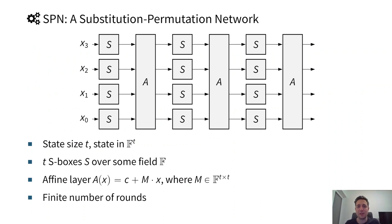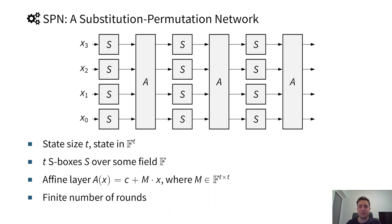What is a partial SPN scheme? Let me first start with an SPN scheme, a substitution permutation network. This is a classical one: we have some inputs, then a non-linear layer, after that an affine layer, and so on, for a finite number of rounds. The state size is T, and we use T S-boxes in each round, so essentially a full non-linear layer. The affine layer is mostly a multiplication by some matrix M — the linear layer — plus the addition of a round constant or round key.